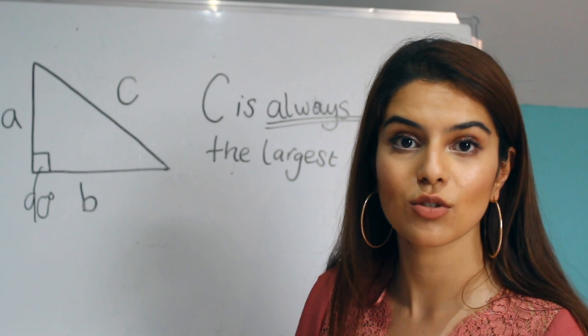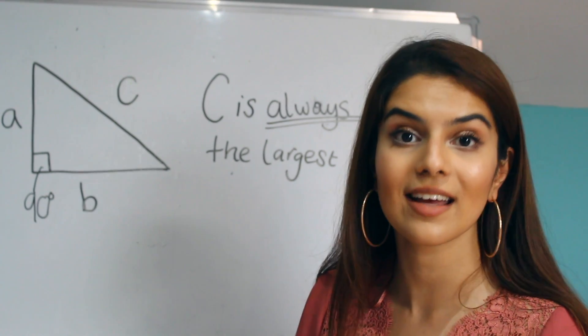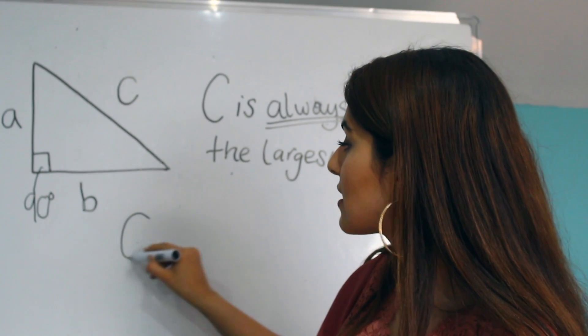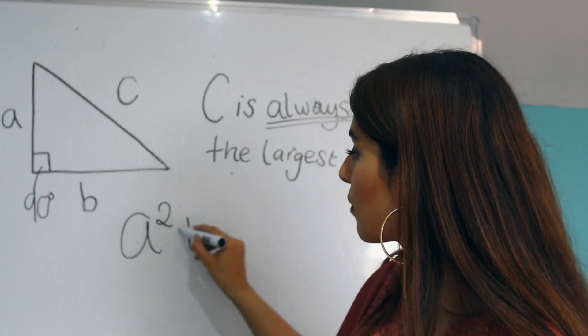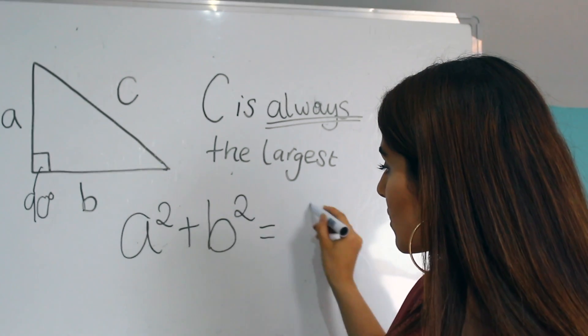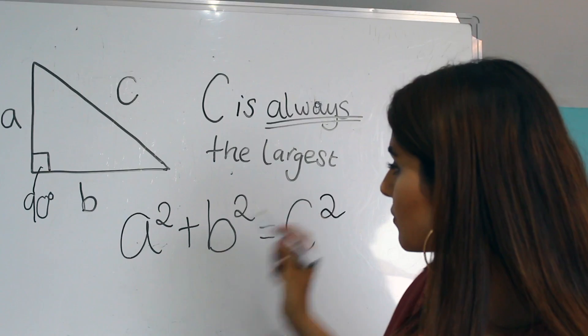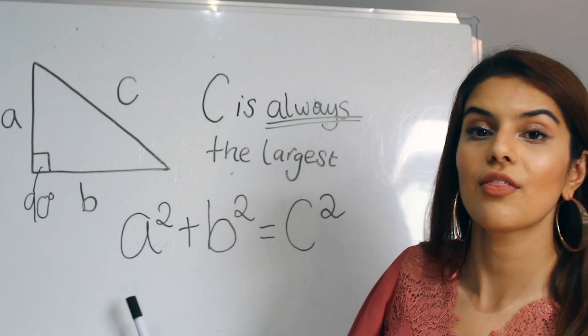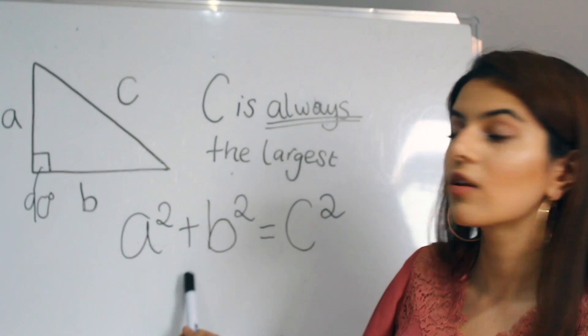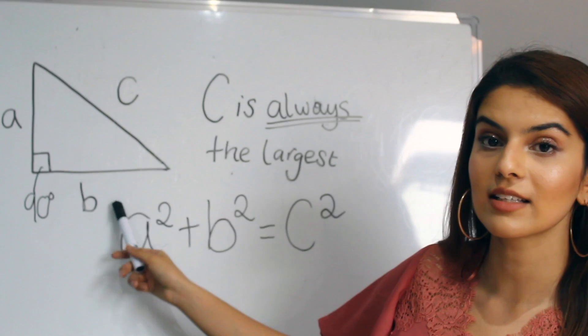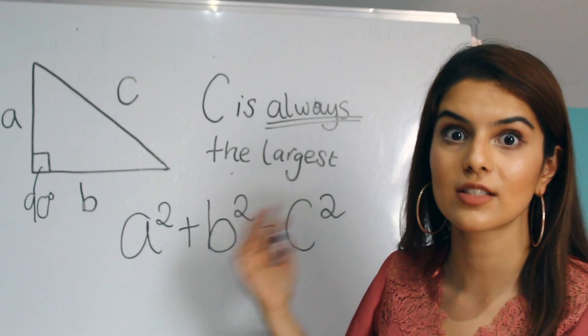And the basic equation for Pythagoras' Theorem is A squared plus B squared equals C squared. Meaning that the length of A squared plus the length of B squared equals the length of C squared.